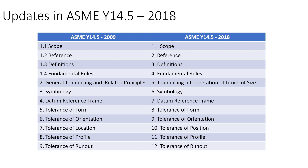Apart from this structural change, there are some modifications in section titles as well. As you can see, 'General Tolerancing and Related Principles' is renamed as 'Tolerancing Interpretation of Limits and Fits,' and 'Tolerance of Location' is renamed as 'Tolerance of Position.'